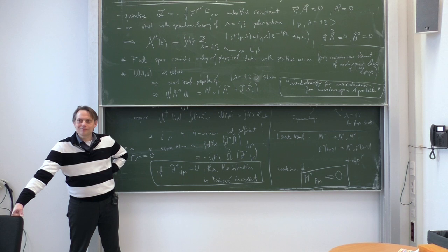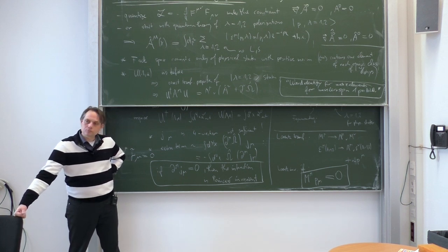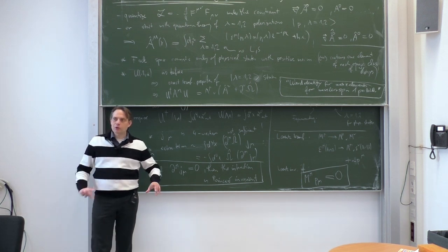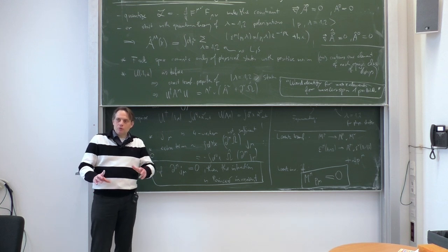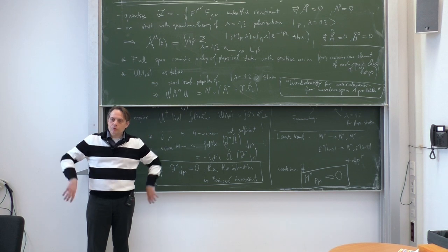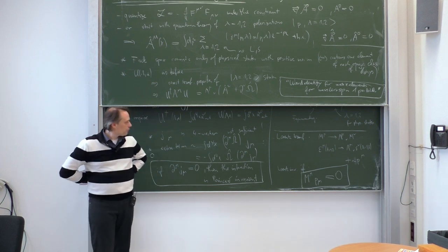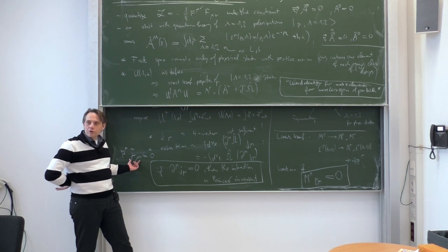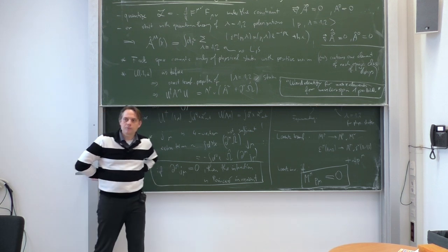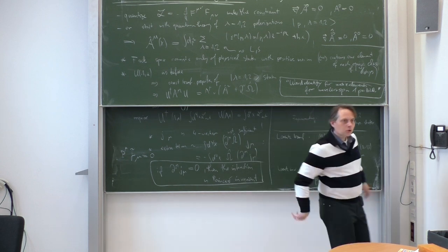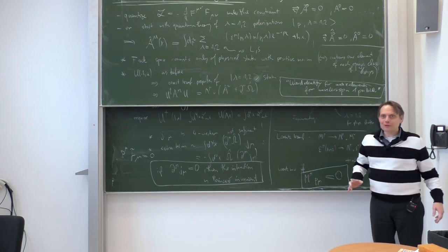The relationship between Feynman diagrams and field operators can be seen once we define how the Feynman diagrams are given in terms of matrix elements or expectation values of field operator products. Then you can see a direct relationship between this Ward identity and the appearance of the current as an operator. All right, let us stop here and turn to the exercise sheet.